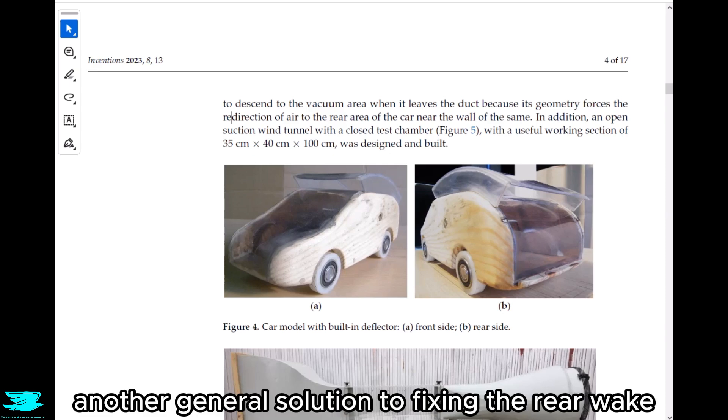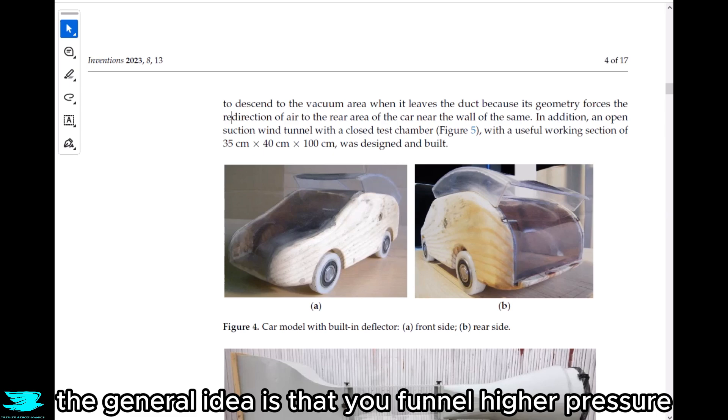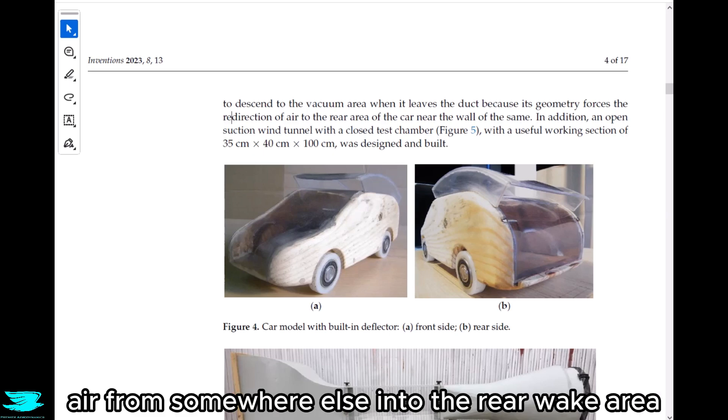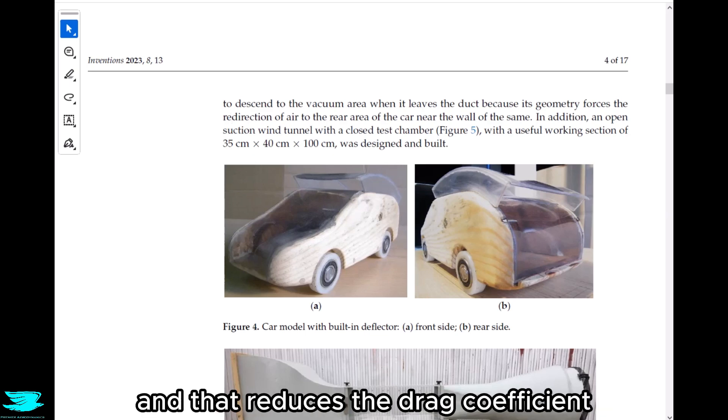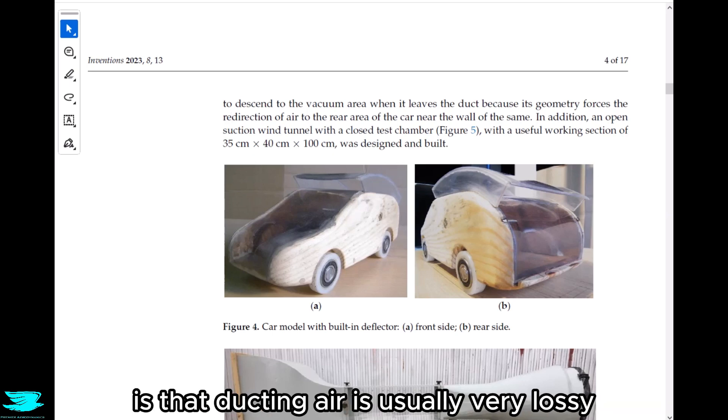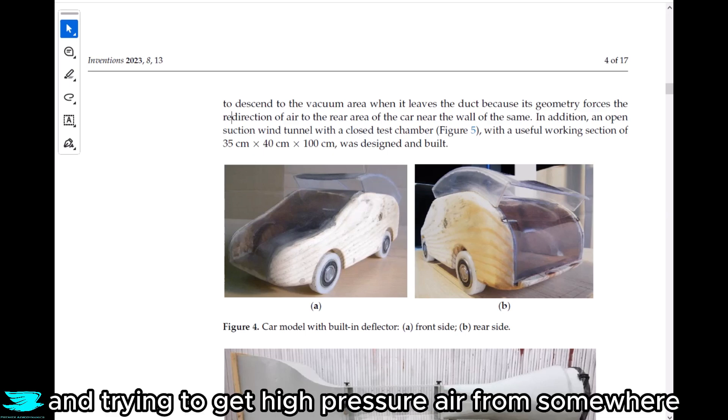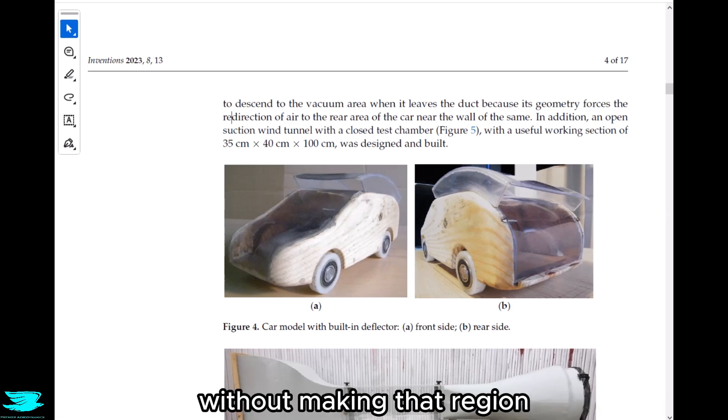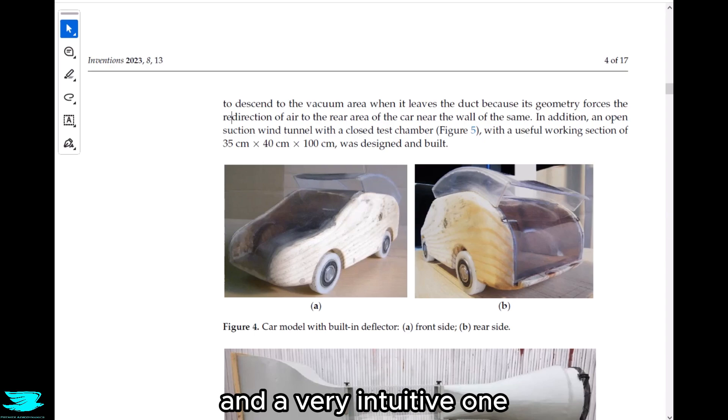Another general solution to fixing the rear wake is by using ducts. The general idea is that you funnel higher pressure air from somewhere else into the rear wake area. That way you have higher pressure here instead of lower pressure and that reduces the drag coefficient. One of the obstacles is that ducting air is usually very lossy because you have to bend it around corners.